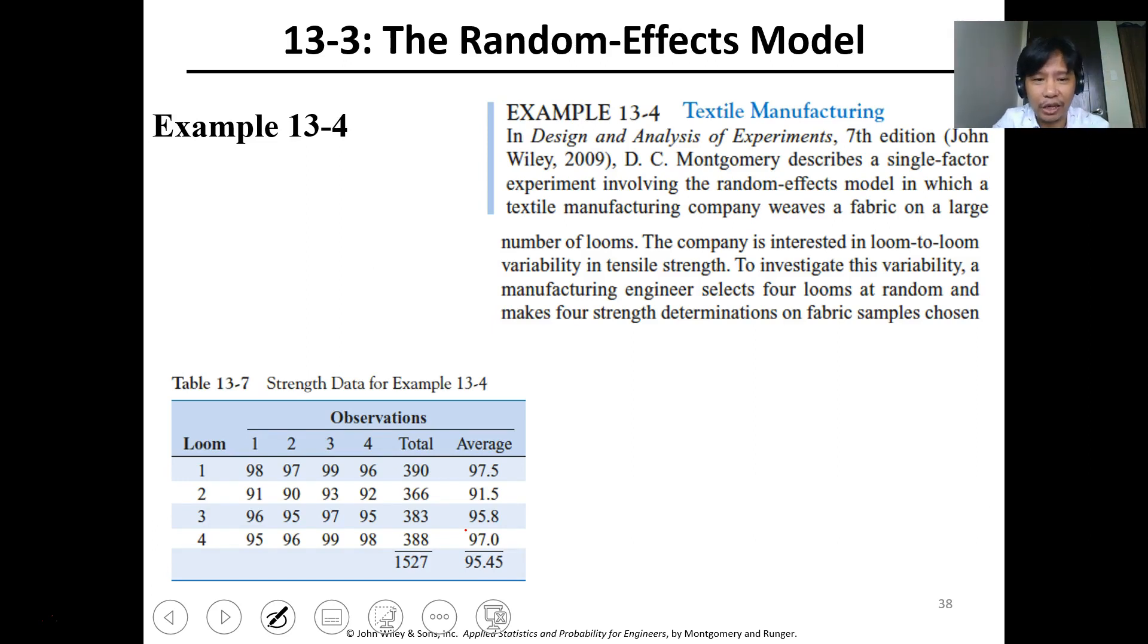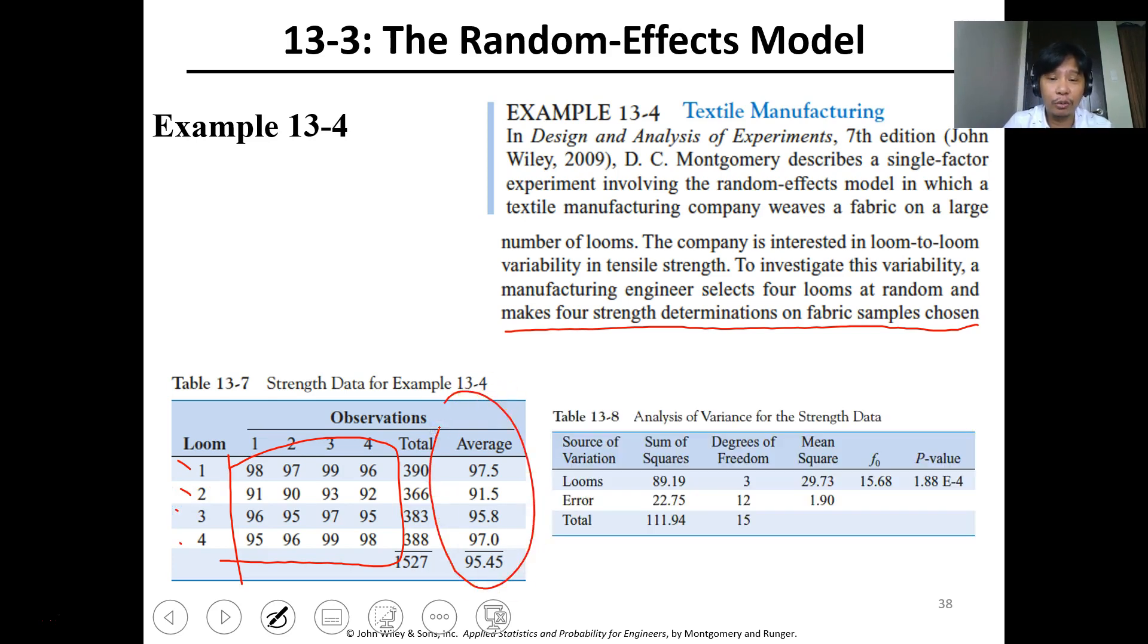So textile design. This is another example. In Design and Analysis of Experiments, DC Montgomery described a single-factor experiment involving the random effects model in which a textile manufacturing company weaves a product on a large number of looms. The company is interested in loom-to-loom variability in tensile strength. To investigate this variability, a manufacturing engineer selects four looms at random and makes four strength determinations from fabric samples chosen. So these are the strength observations at different looms. Get the average, then you just do it in Excel. I won't do it. We'll have this table, single factor. Take note, this is your MSE and this is your MS treatment.